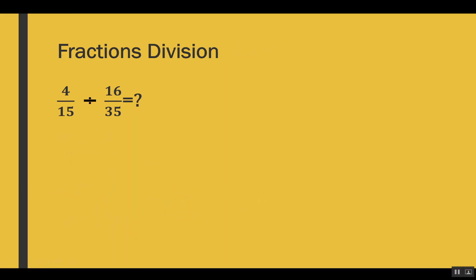Those were examples for multiplication. Now let's see division. I have taken 4 out of 15 and we have to divide it by 16 out of 35. Division is super easy — it has just one extra step, which is to flip the second fraction. So we write the first fraction as it is: 4 out of 15. We flip the second fraction so 16 out of 35 becomes 35 out of 16, and the division sign changes to a multiplication sign.